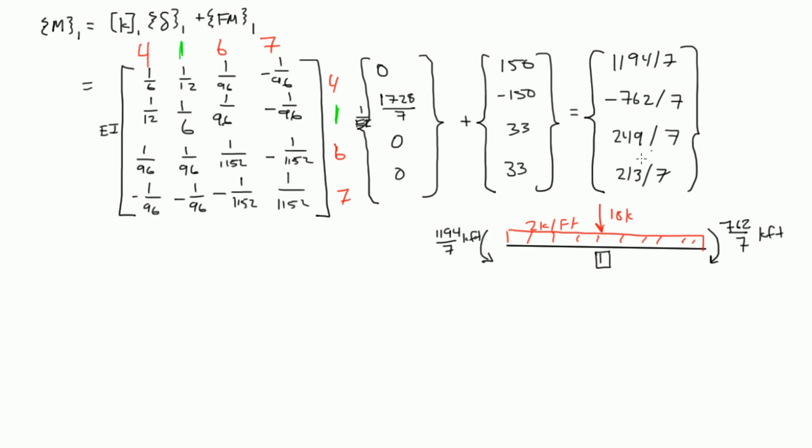And then, you have 249 and 213 over 7 that correspond to degree of freedoms numbers 6 and 7. And remember, 6 and 7 were both shear degree of freedoms, right? Vertical. So, that means on the right side, or left side here, you have 249 over 7 kips. And on the right side, you have 213 over 7 kips.